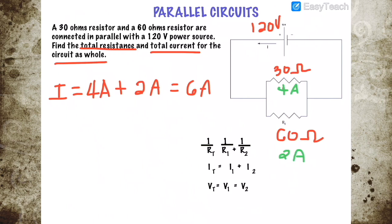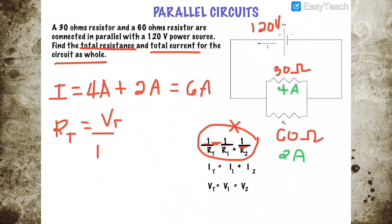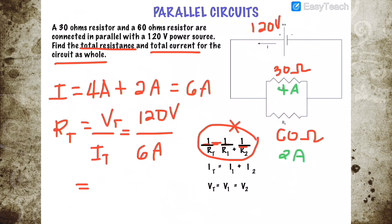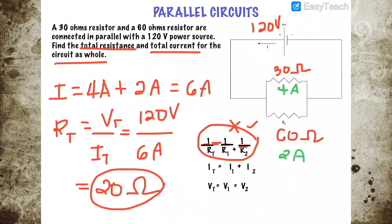For total resistance, rather than using the formula 1 over R total equals 1 over R1 plus 1 over R2, it is easier to use R total equals V total over I total. Our total voltage is 120 volts and our total current is 6 amperes, so total resistance equals 20 ohms. This gives the same value as the fraction form and is easier to use. To find the total resistance of a parallel circuit: V total over I total.